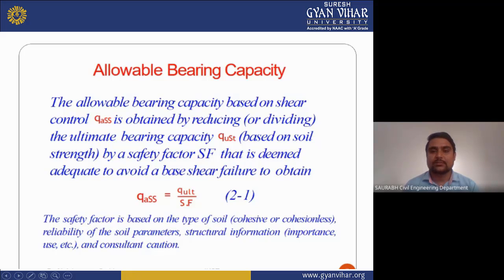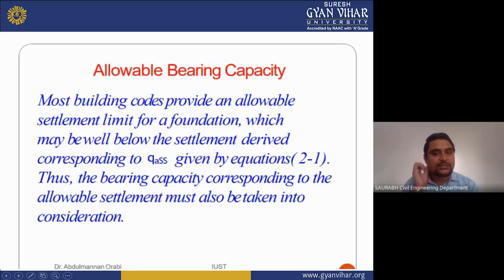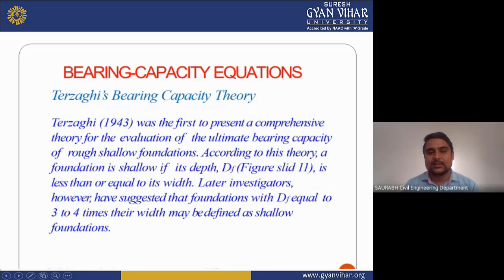Most building codes provide an allowable settlement limit for the foundation, which may be well below the settlement corresponding to QAS given by the equation. Thus, the bearing capacity corresponding to the allowable settlement must also be taken into consideration.